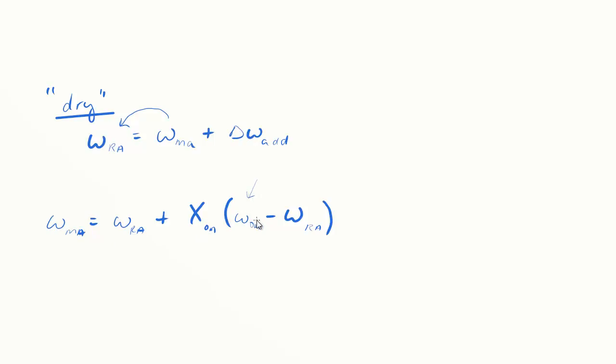If the outdoor air fraction is 1, when you distribute this, you'd get 1 of the OA and this cancels with this. The nice thing is we know that value, so we actually have two equations and two unknowns. We don't know mixed air and we don't know return air, but we have two equations, so we can solve for the return air.